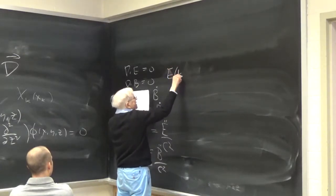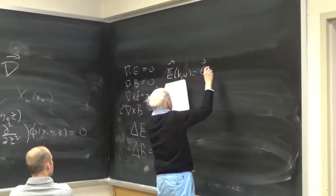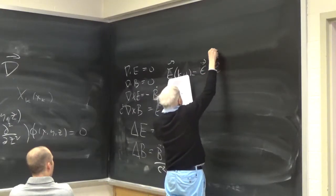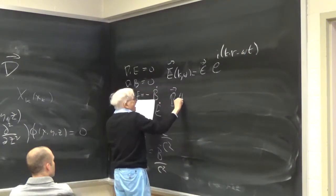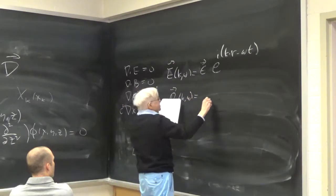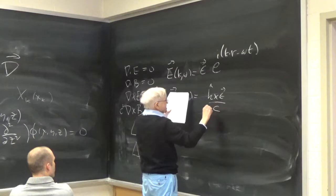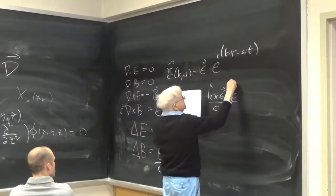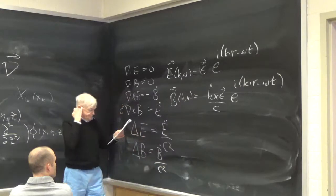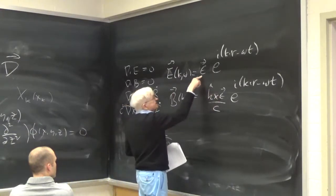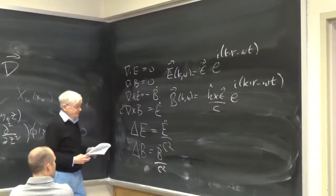The particular solutions are: E(k,ω) equals some polarization vector ε times e^{i(k·r − ωt)}, and B(k,ω) equals (k̂ × ε)/c times e^{i(k·r − ωt)}. This is the same polarization vector ε. The magnetic field is perpendicular to the electric field for these solutions.